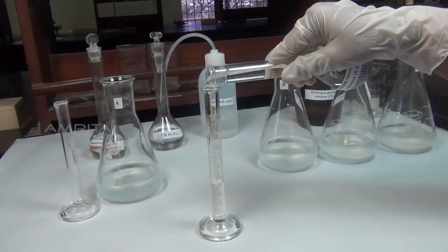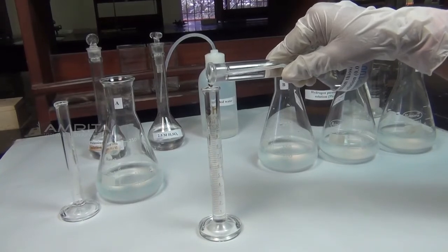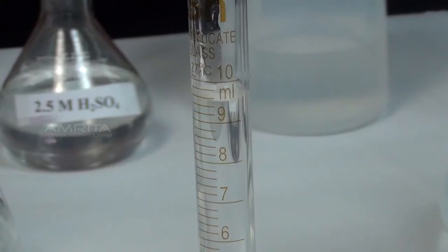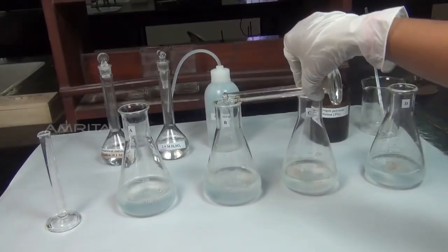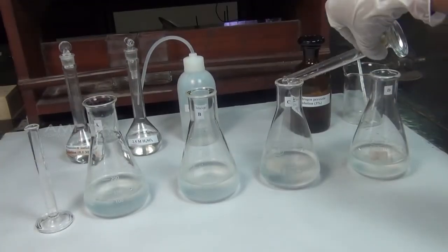Add 10 ml of 0.05 molar sodium thiosulfate solution to flasks A, B, C, and D using another measuring cylinder.